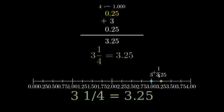Therefore, 3 and 1 quarter is equal to 3.25 in decimal form.